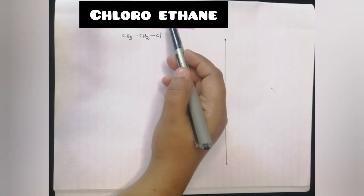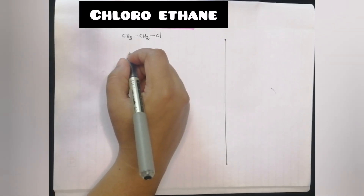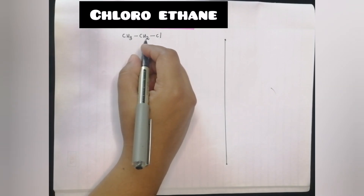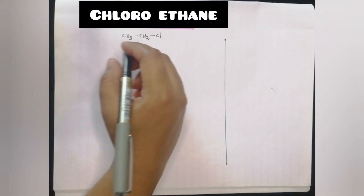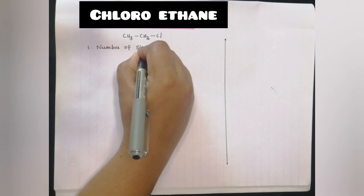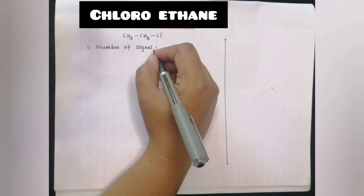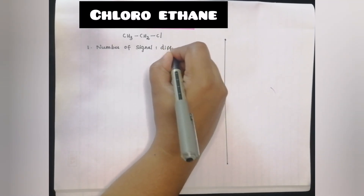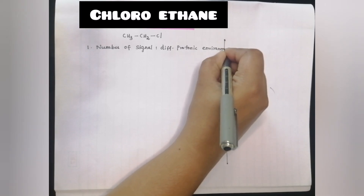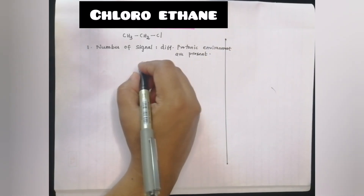We are going to discuss spectral problems. The first compound is 1,1-dichloroethyl. Now we are going to discuss NMR spectrum in this class. First of all, we have to discuss NMR interpretation. Step 1 is the number of signals — how many different kinds of protonic environments are present in the compound, and how many different protons are present.